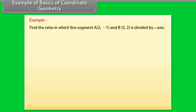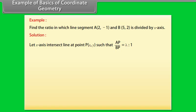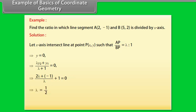Example: Find the ratio in which the line segment joining A(2, −1) and B(5, 2) is divided by the X-axis. Solution: Let the X-axis intersect the line at point P(X, Y) such that AP by BP equals lambda to 1. It implies Y equals 0, which gives 2 lambda plus (−1) divided by lambda plus 1 equals 0, so lambda equals 1 by 2. Therefore AP by BP equals 1 to 2.